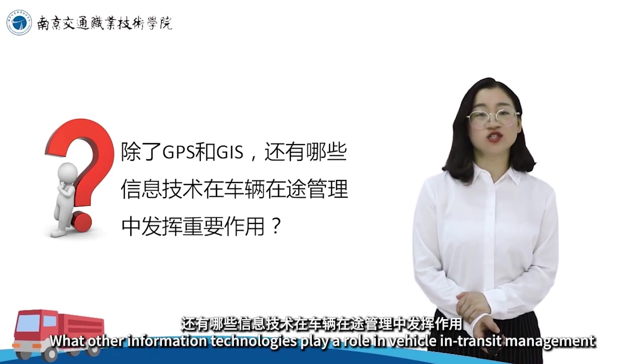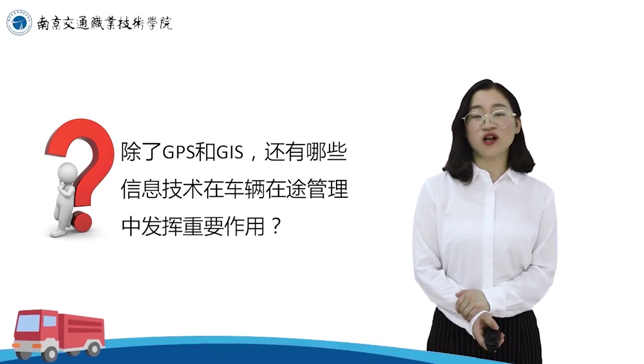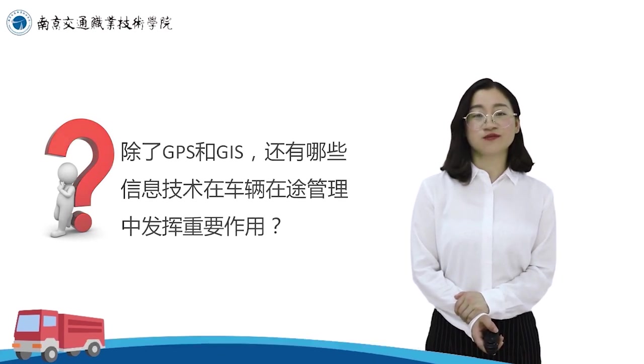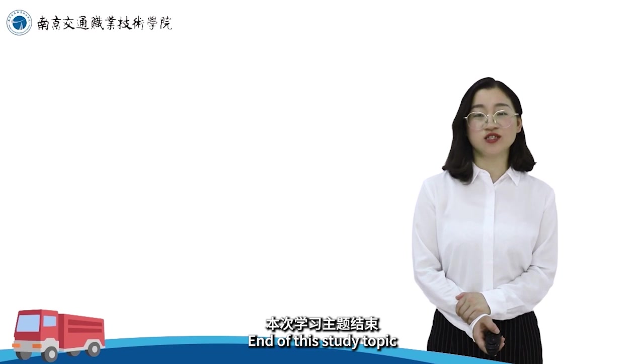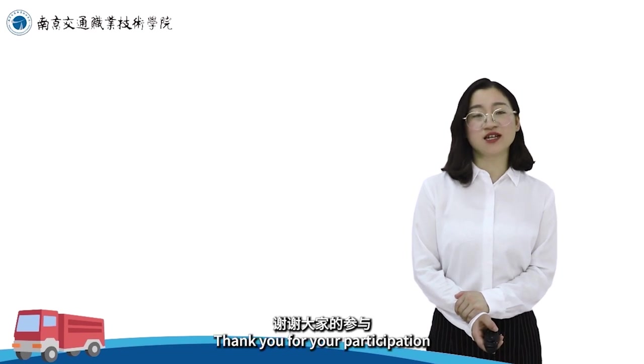GIS与GPS起到了减少生产企业库存、加速资金周转、提高物流效率和降低物流成本的作用。当前物流运作越来越智能化，大家思考一下，除了GPS和GIS，还有哪些信息技术在车辆载货管理中发挥作用呢？本次学习主题结束，谢谢大家的参与。